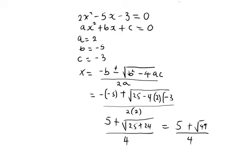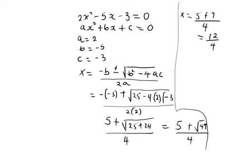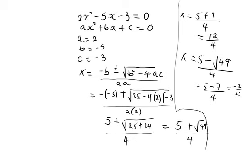The square root of 49 is 7. So x equals 5 plus 7 divided by 4, which is 12 divided by 4, giving x equals 3. For the negative root, we have 5 minus 7 divided by 4, which is negative 2 over 4, simplified as negative one half. So x is either 3 or negative one half. That is the end of the lesson. Thank you for the attention.